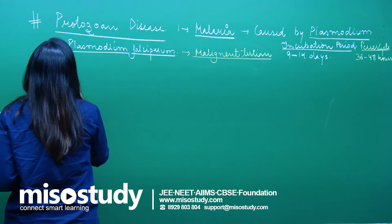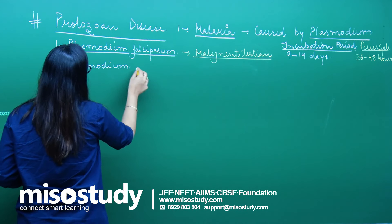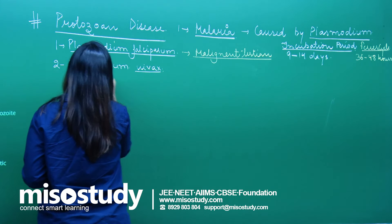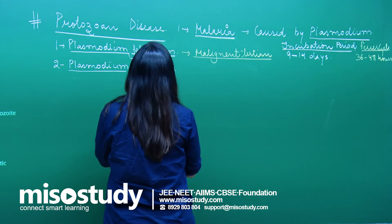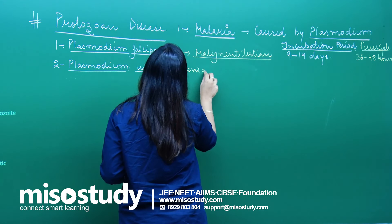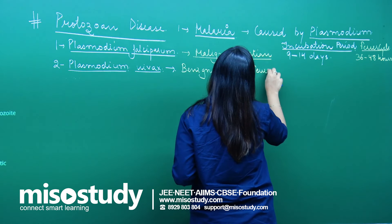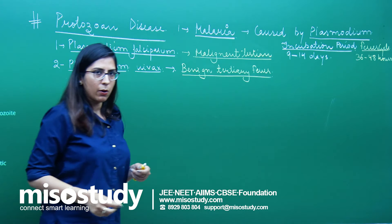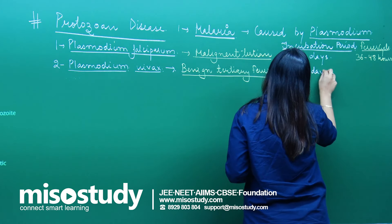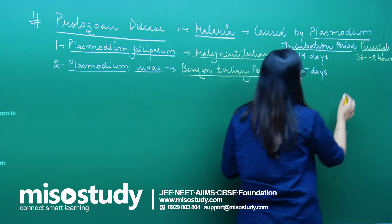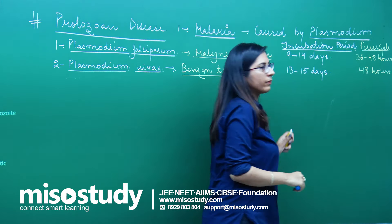Let us talk about the second species, plasmodium vivax. This is another species and it causes another type of fever, which is termed as benign tertian fever. In this case the incubation period is different, that is around 13 to 15 days, and fever comes after 48 hours — there is a recurrent fever.